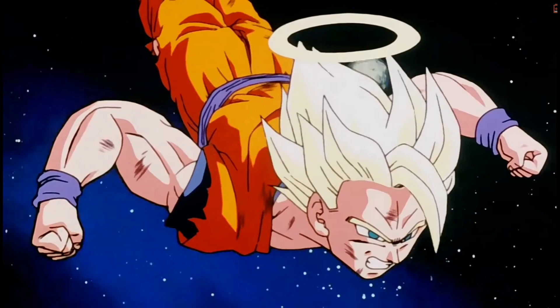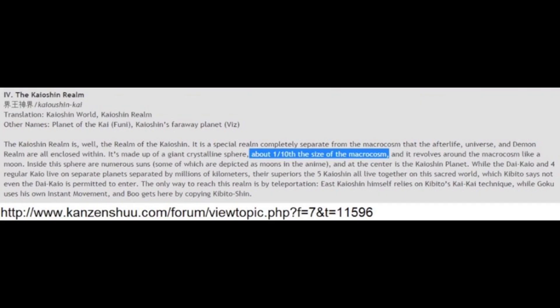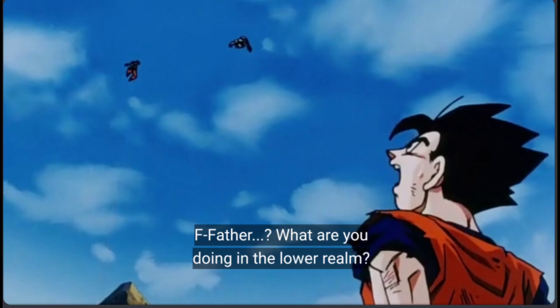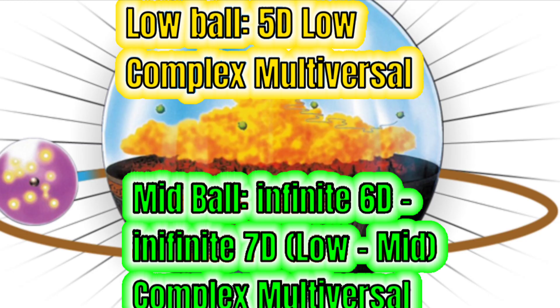Now with the afterlife out of the way, let's go to the Kaishin realm. The Kaishin realm is one tenth of the afterlife and living world combined. The living world is a lower realm in comparison to the Kaishin realm, and judging how it's one tenth the size of the afterlife and living world, it's definitely a higher dimension. At bare minimum this should be about infinite fifth dimensional, but if you want to use the super dimensions and dead zone you can scale it to infinite sixth to seventh dimensional. So yes, the macrocosm is a low complex to mid complex multiversal structure.